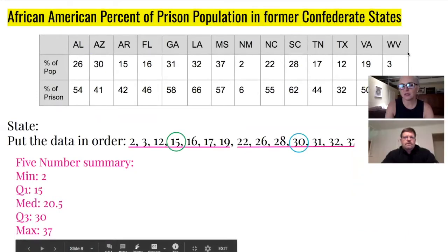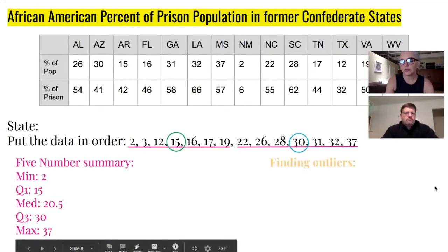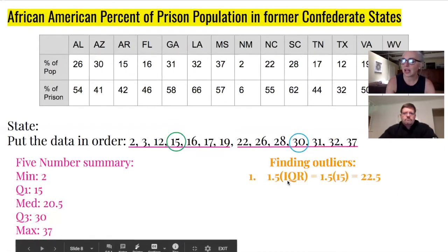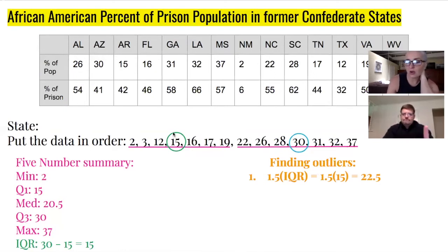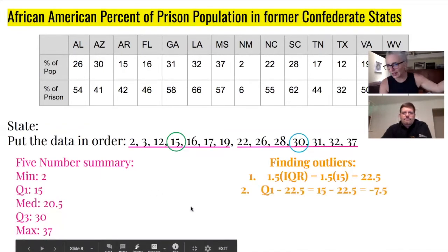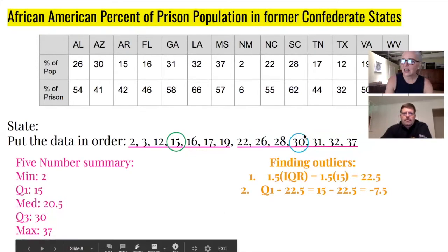Let's confirm there are no outliers for the states data. The IQR was 15, so 1.5 times 15 is 22.5. Going 22.5 below Q1 (which is 15) gives a negative number, so we're fine there. Going 22.5 above Q3 (which is 30) gives 52.5, which is well above the maximum of 37. No values fall outside negative 7.5 to 52.5, so there are no outliers.